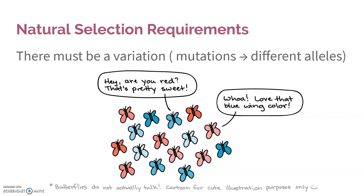In order for natural selection to occur, there are four things that have to happen. One, there has to be some sort of variation. There needs to be mutations that have led to different alleles, because if there's no variation, there's nothing to be advantageous or disadvantageous.